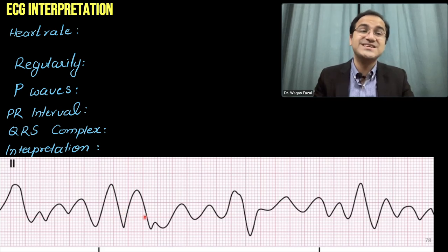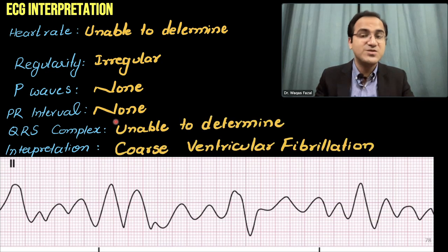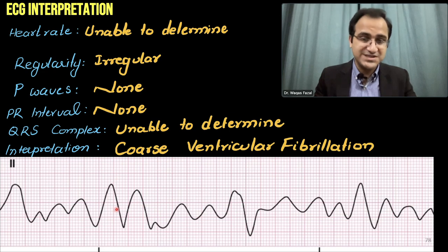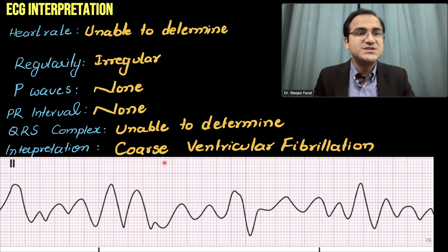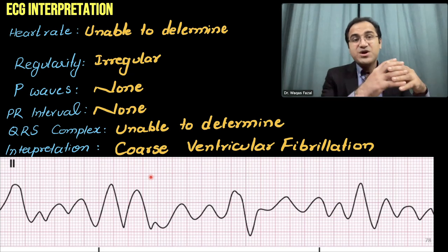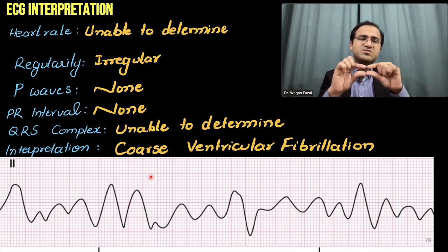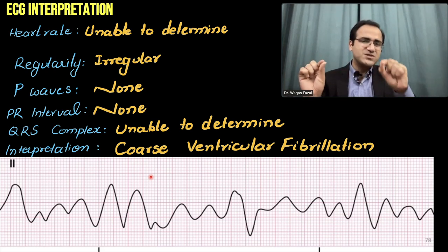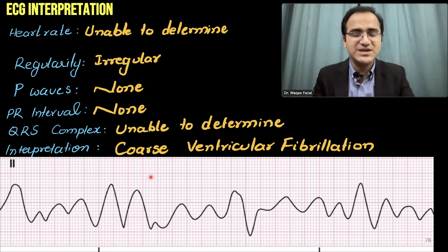Looking at this ECG of ventricular fibrillation: heart rate unable to determine, regularity irregular, P waves none, PR intervals none, QRS complex unable to determine — interpretation is coarse ventricular fibrillation. There are two types: coarse ventricular fibrillation, which has prominent waves, and fine ventricular fibrillation, which is more like a straight line but has small squiggles and bumps. That is called fine ventricular fibrillation.